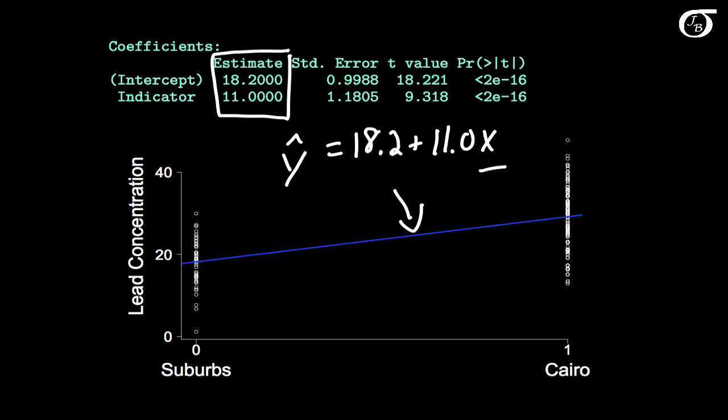Wait a minute here. 18.2 is the mean of the suburbs officers, and 11.0 is the difference in means. And so the regression line here is passing through the mean for the suburbs officers and the mean for the Cairo officers.